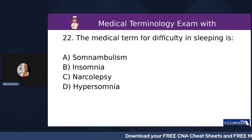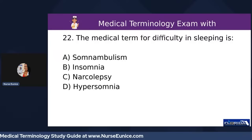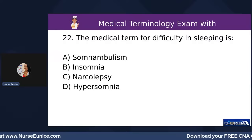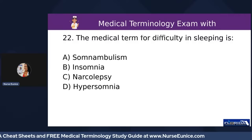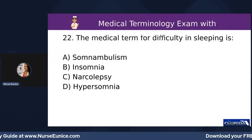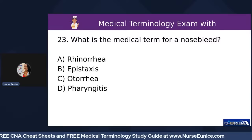Number twenty-two: the medical term for difficulty in sleeping is A) somnambulism, B) insomnia, C) narcolepsy, or D) hypersomnia. The answer is B, insomnia. The other options mean the person can sleep: narcolepsy means they fall asleep suddenly even after just waking up, and hypersomnia means they are excessively sleepy.